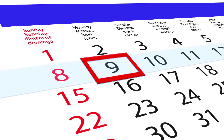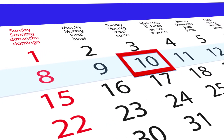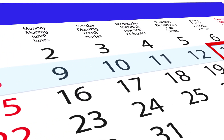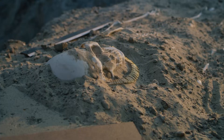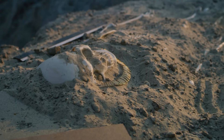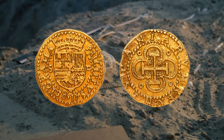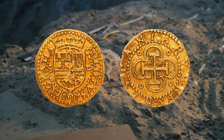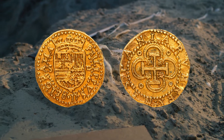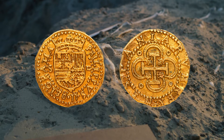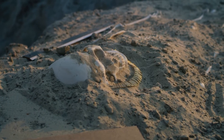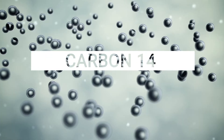Absolute dating, also known as calendar dating, tells the age of something in actual years. For example, if human remains are found next to a coin with the year 1500 inscribed on it, scientists can tell that the remains date back to sometime during or after the year 1500.